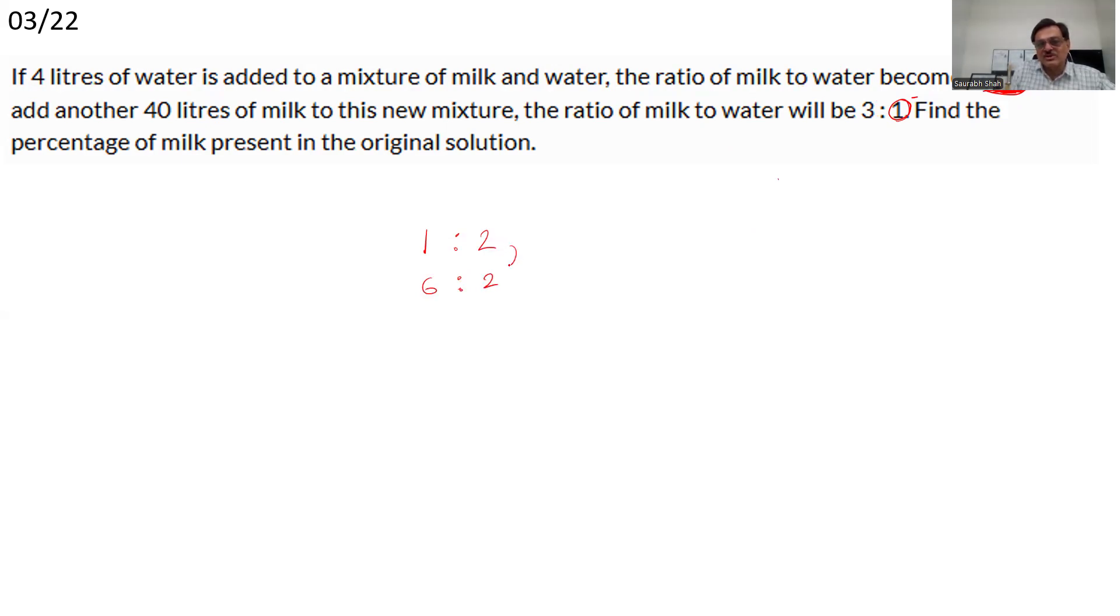Why is water here 1? It should be 2. Because here it is 2. Water should remain 2. LCM of 1 and 2 is 2. So I can simply write the ratios as 1 is to 2, 6 is to 2. 3 is to 1 can be written as 6 is to 2. So water has remained constant. According to this, milk should increase by 5. Question says the milk is increasing by 40. Multiply everything by 8. So 8 times 1 is 8, 8 times 2 is 16, 8 times 6 is 48, 8 times 2 is 16. So we see that this is the resultant mixture where you have 1 is to 2. 8 liters of milk, 16 liters of water.